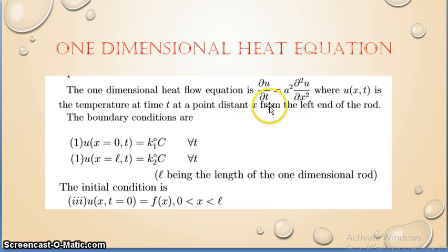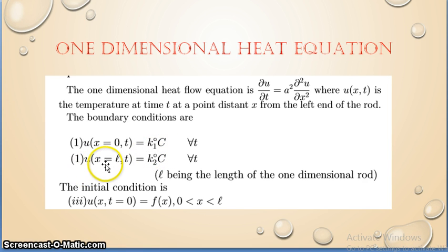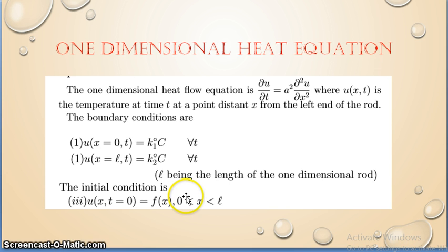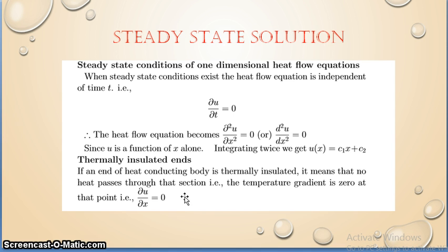The one-dimensional heat equation is ∂u/∂t = a²∂²u/∂x². The boundary conditions are: (1) u(0,t) = k₁°C, (2) u(l,t) = k₂°C, and the initial condition is u(x,0) = f(x). In heat equations, three boundary conditions are sufficient to find the final solution, unlike the wave equation which needed four.